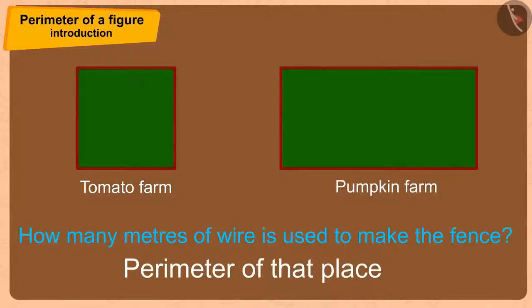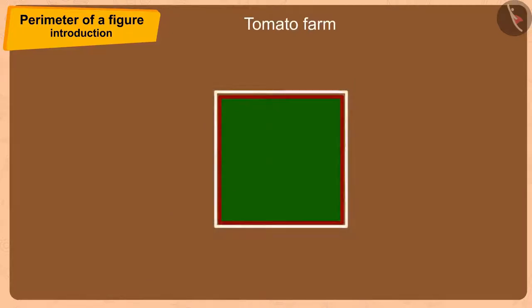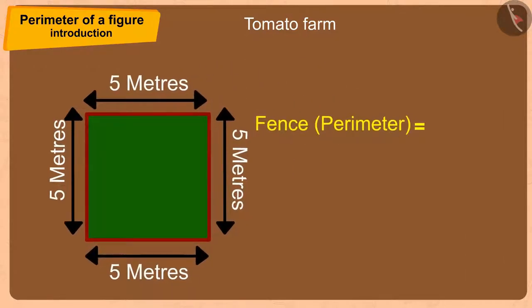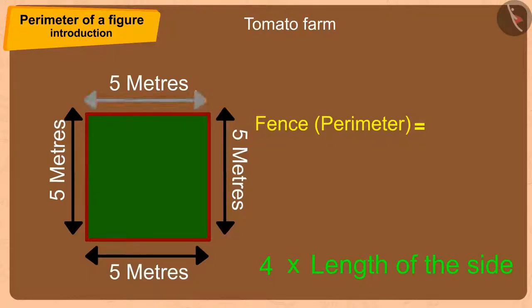Tomatoes are cultivated in a square-sized area, with each side being 5 meters in length. And because all the sides of the square are of equal length, the size of a square-shaped fence will be 4 times the length of the side.